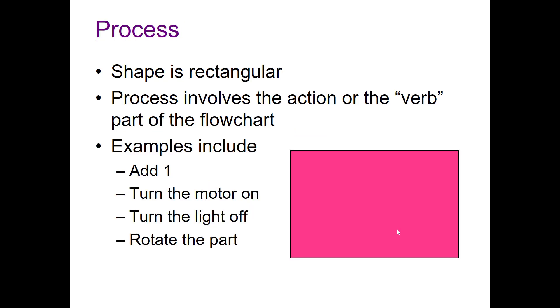Then we've got our process block. It's a rectangular shape and it's going to be the verb of the flowchart. This is when you're doing something. Some examples would include if I'm adding one, if I'm turning a motor on, if I'm turning a light off, or if I'm rotating a part.